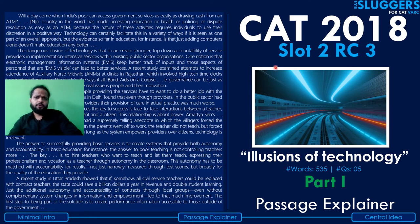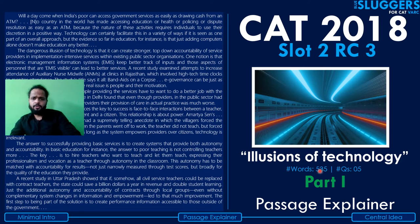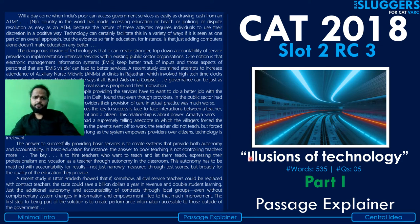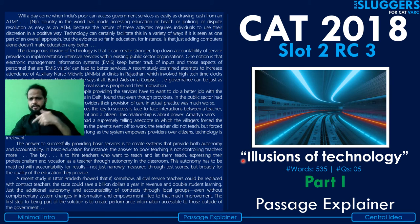Hi everyone, welcome to the channel Sluggers Blue for your CAT RC preparation. In today's session we'll be taking up an RC which was asked in the CAT exam in the year 2018 in the second slot. I have titled the RC as 'Illusions of Technology' — 535 words, five questions, slightly lengthy. This is the first part of the session where I'll explain the passage paragraph by paragraph in detail; the second part is where I'll take you through the questions.